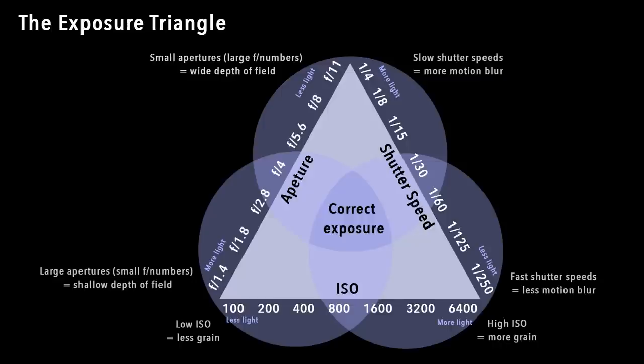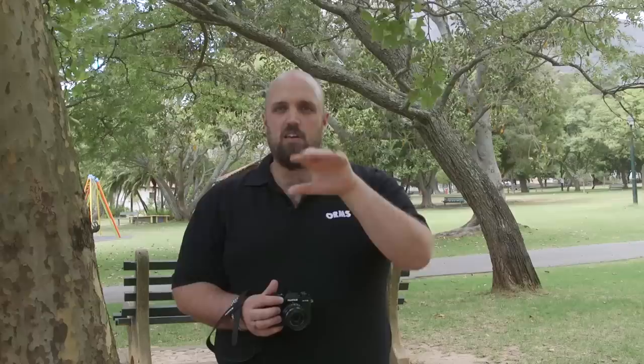Correct exposure doesn't necessarily mean that the image will be exactly what you want it to be. All that correct exposure effectively means is that you will have an image where your main subject matter in front of you is not underexposed, so it's not too dark, and it's not overexposed, so it's not too light.